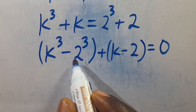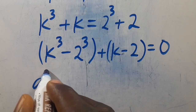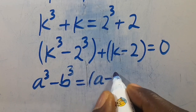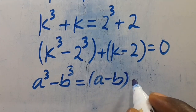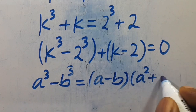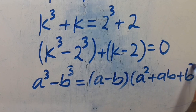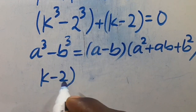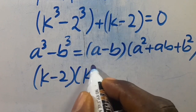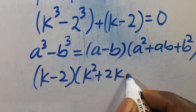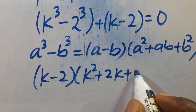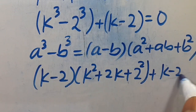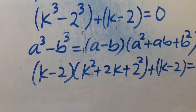There is a difference of cubes rule: when you have a to the power of 3 minus b to the power of 3, it always equals a minus b, multiplied by a squared plus ab plus b squared. Applying it here, we get k minus 2, multiplied by k squared plus 2k plus b squared — our b is 2, so b squared is 4 — plus k minus 2, all set equal to 0.